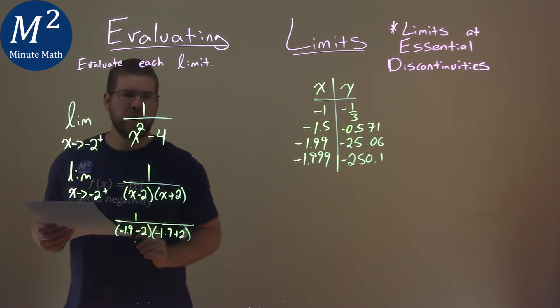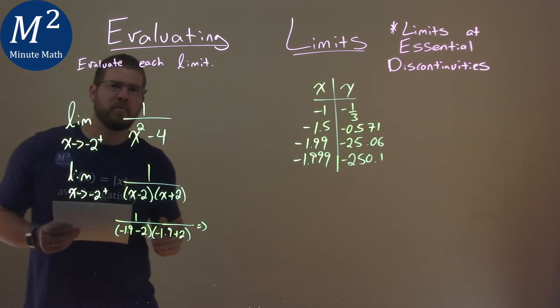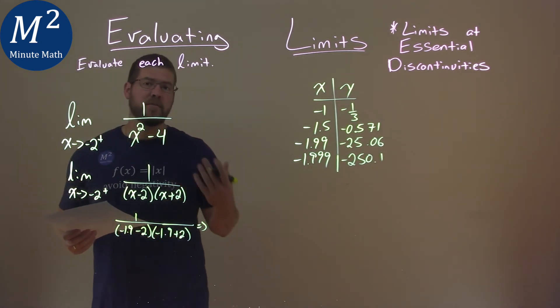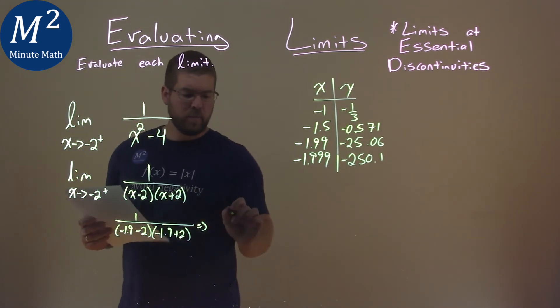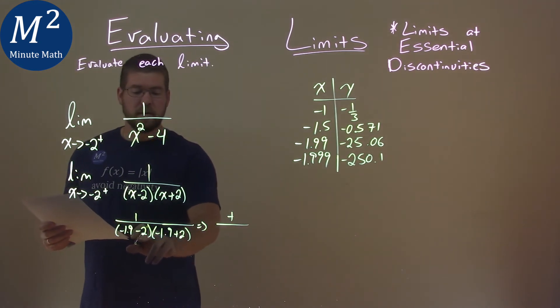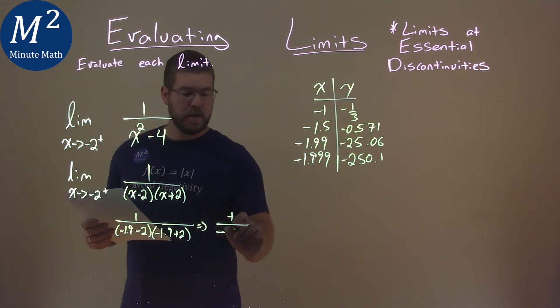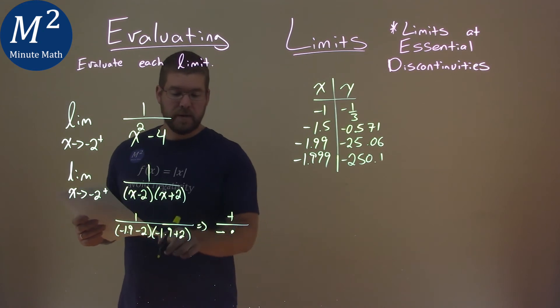So, I plugged in for both of those. And what happens? I'm only looking for, is this final result positive or negative? So, the top number 1 is positive. Here, negative 1.9 minus 2, we know is a negative number. And we're going to multiply that by, well, negative 1.9 plus 2 is a positive number.